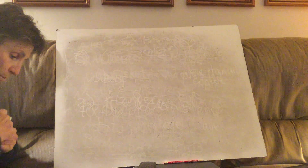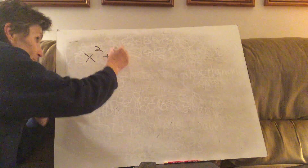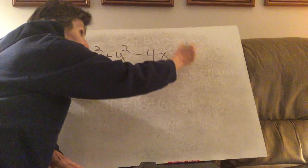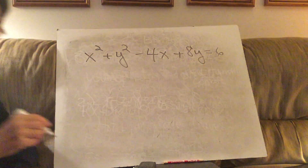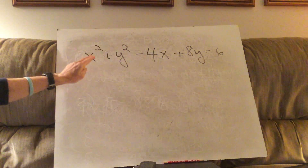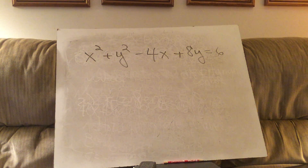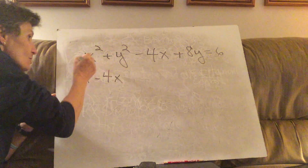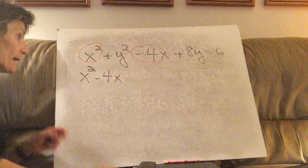The next problem looks a little different. If the equations are not in standard form — the way a and b were — then in order to find the center and the radius you have to put them in standard form. You know how to do this: you need to complete the square. We're going to complete the square twice, once on x and once on y, to get those two squared parentheses like we had in a and b.